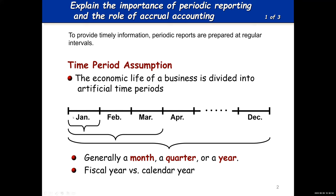So if we prepare financial statements for the month of January, we should have all of our revenues for January and all of our expenses for January so we can have our net income for January. We can also prepare financial statements for the entire year. In this calendar year ending December 31, we would have all of our revenues from January 1 through December 31, all of our expenses from January 1 to December 31 to get our annual net income.